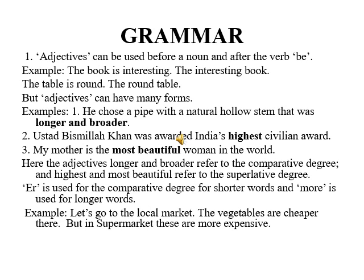Dear students, let's move towards the grammar part in this unit. Adjectives can be used before a noun and after the verb 'be'. For example: 'The book is interesting' and 'The interesting book.' 'The table is round' and 'The round table.' But adjectives can have many forms. For example: 'He chose a pipe with a natural hollow stem that was longer and broader.' 'Ustaz Bismillah Khan was awarded India's highest civilian award.' 'My mother is the most beautiful woman in the world.'